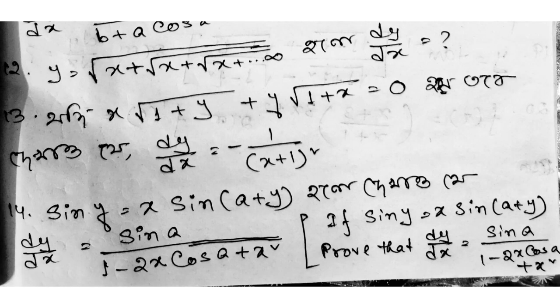Question 10: y equals root over (x plus root over (x plus root over (x ... to infinity))), find dy/dx. Question 11: if x root over (1 plus y) plus y root over (1 plus x) equals 0, show that dy/dx equals minus 1 by (x plus 1) whole squared.